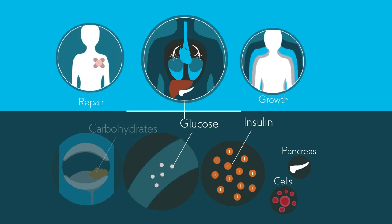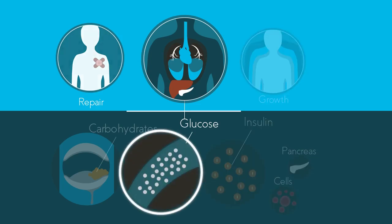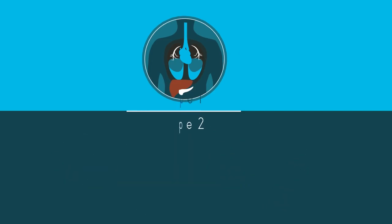If you have diabetes, your body cannot make proper use of this glucose, and so it builds up in our blood and cannot be used by cells. There are two main types of diabetes.